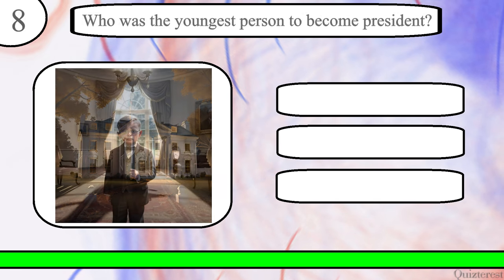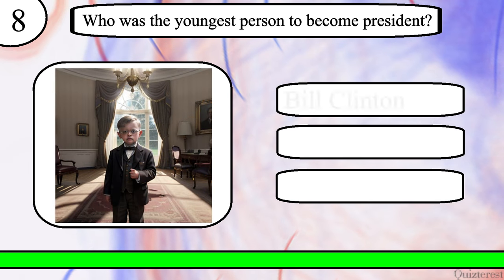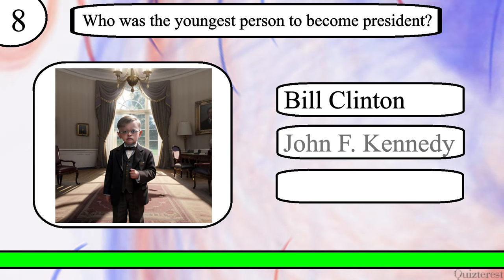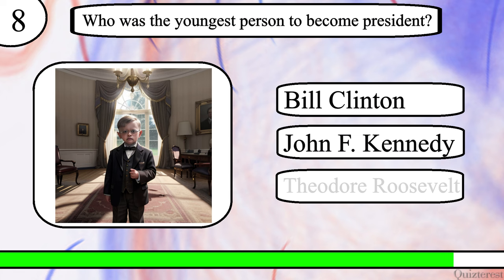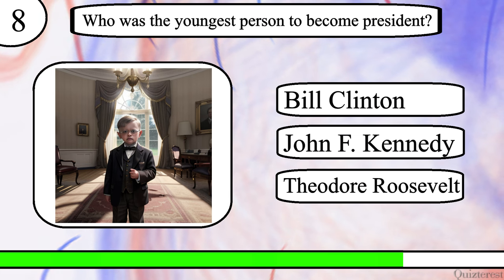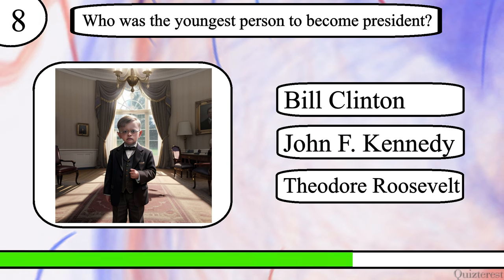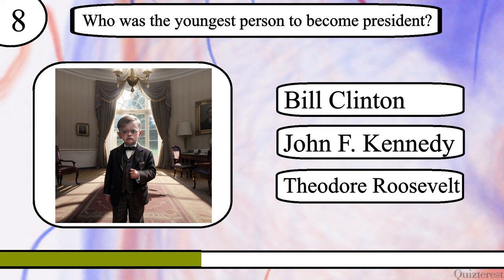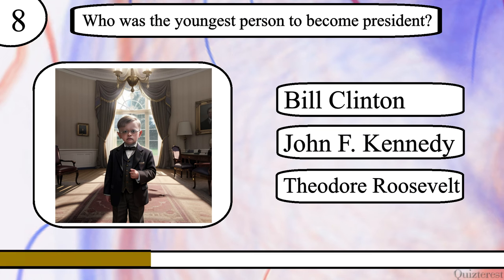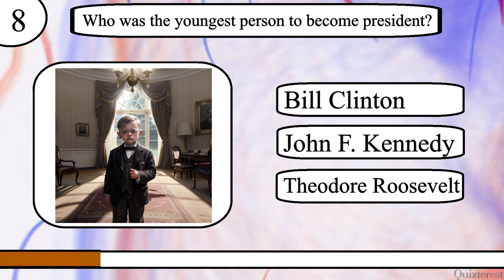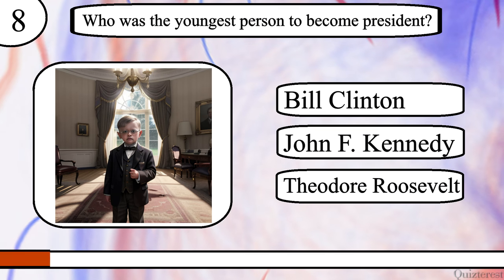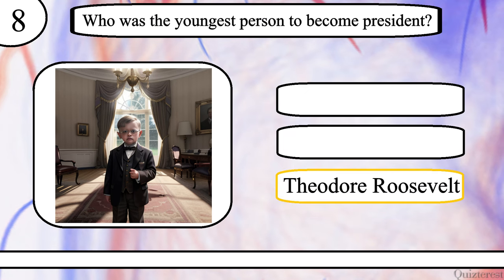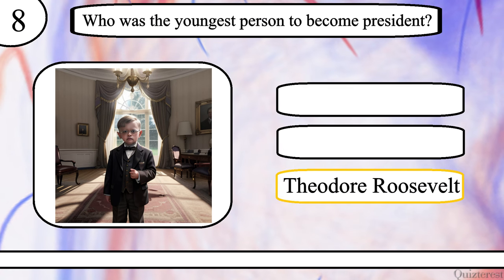Question 8. Who was the youngest person to become President? Bill Clinton, John F. Kennedy or Theodore Roosevelt? The correct answer is Theodore Roosevelt.